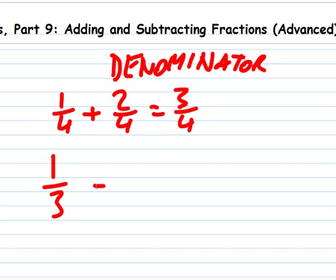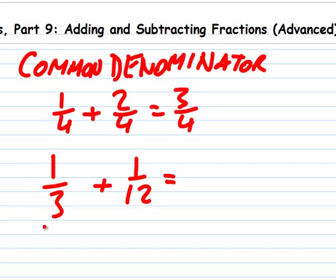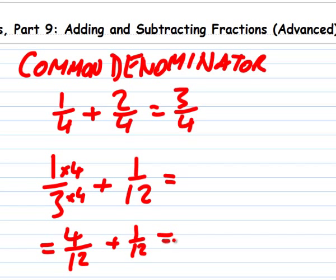What's 1/3 + 1/12? We need to find equivalent fractions with the same denominator, a common denominator. In this case, that's easy. 12 is divisible by 3. 3 × 4 = 12. So if we multiply the top by that same number, 1 × 4 = 4, you can see that 1/3 = 4/12. And 4/12 + 1/12 is easy. The answer is 5/12.